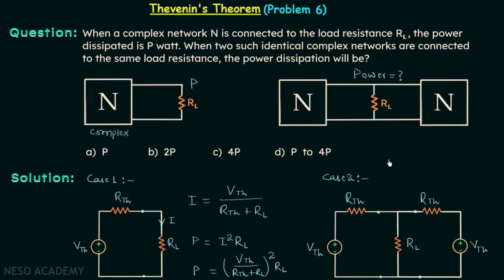One important point: the first case's network is the Thevenin's equivalent circuit, but here this network is not the Thevenin's equivalent circuit for this arrangement. In Thevenin's equivalent, VTH is in series with RTH connected to the load in a specific manner. This is just a simplification, and our next step is to find the Thevenin's equivalent voltage and resistance for this particular network.